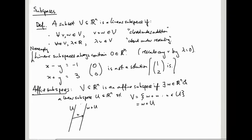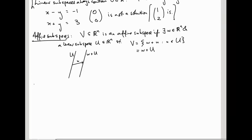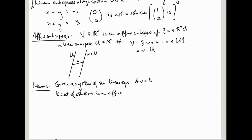And here's the reason we care about them. So lemma, given a system of simultaneous linear equations, A V equals B, the set of solutions is an affine subspace of R^n, where n here is the number of variables. So V is like x1 up to xn.